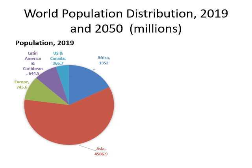Here we're looking at the world population distribution in 2019, in millions. Asia is huge — and for simplicity of the graph, I put together East Asia, Southeast Asia, South Asia, and Central Asia. This includes a tremendous amount of land mass as well as a tremendous number of countries, and it's about 4.5 billion people — way over half the world population. The second biggest group is in Africa.